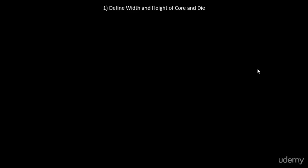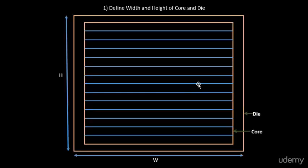Hello everyone. In this section we will try to understand how we come up with the width and height of core and die. In the physical design overview flow, this was the first step — to define the width and height of the core and die.